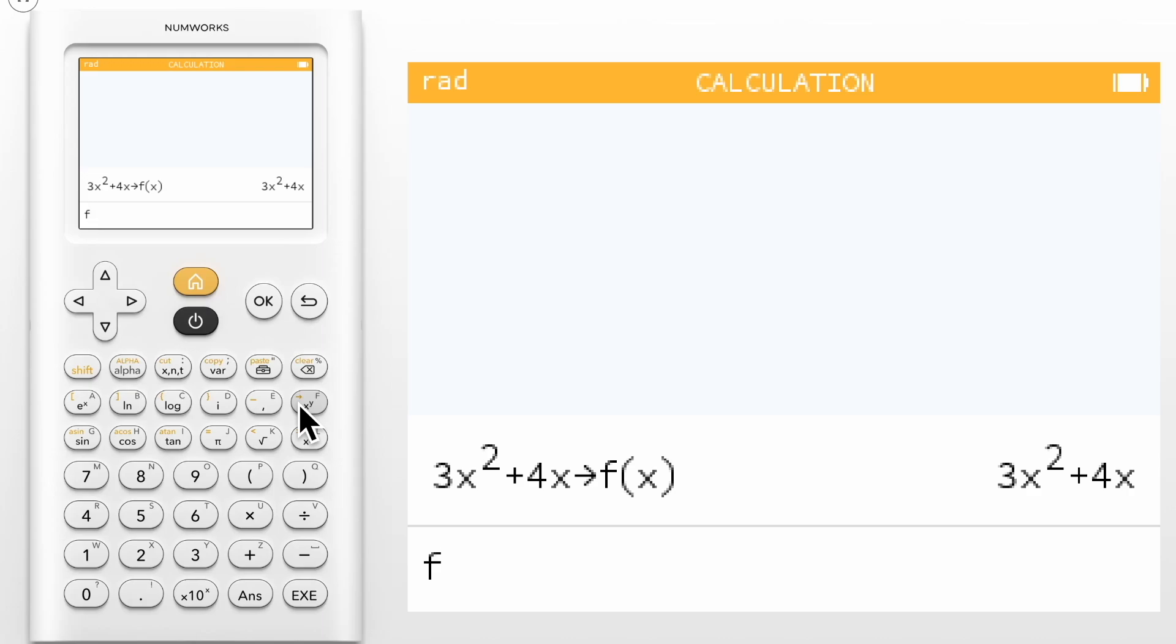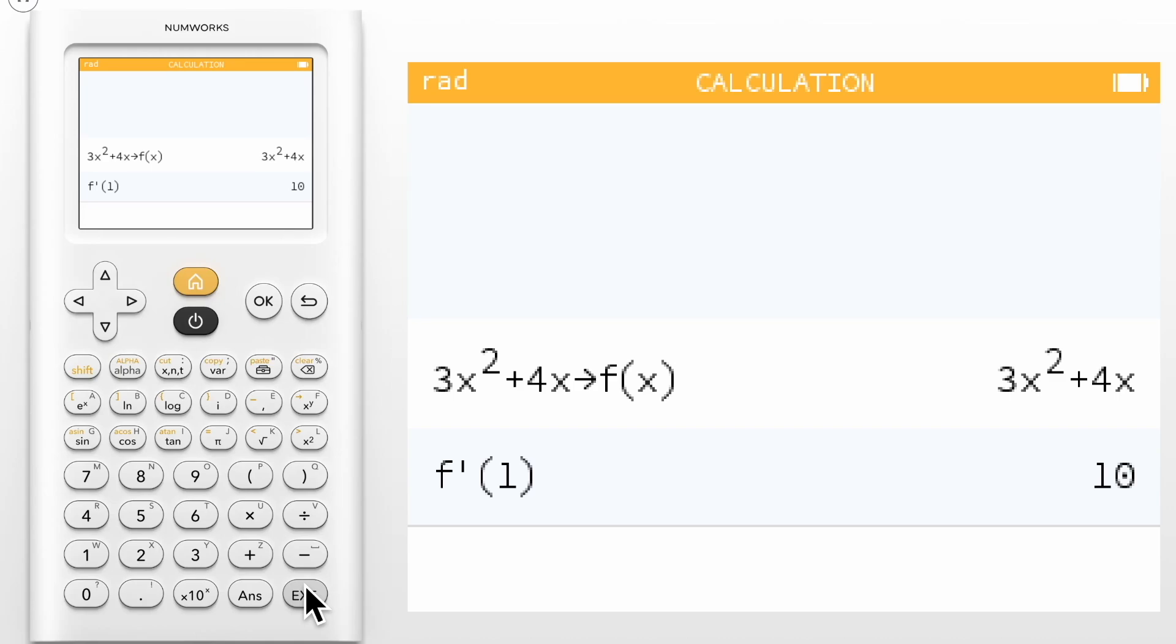To insert a prime mark, use the alpha key followed by the toolbox key. Then use parentheses around the x value. Pressing execute will compute the first derivative of f at x equals 1.